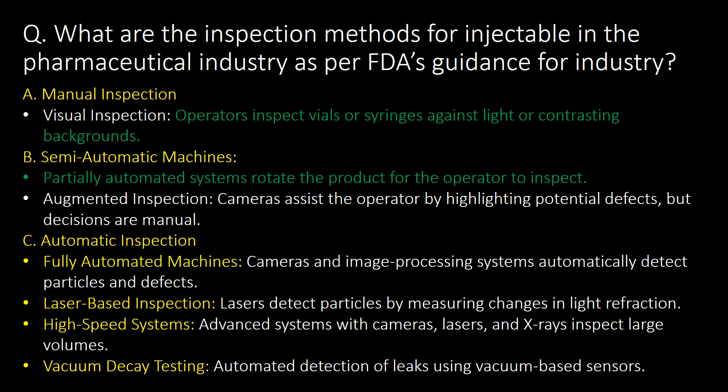Second method is semi-automatic machines, where partially automated systems rotate the product for the operator to inspect. Third is automatic inspection, which includes fully automated machines, laser-based inspections, high-speed systems, and vacuum decay testing.